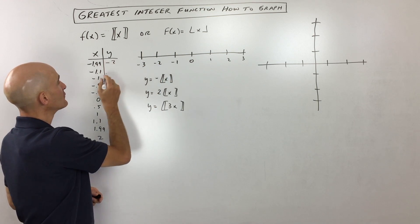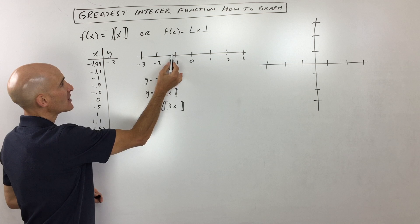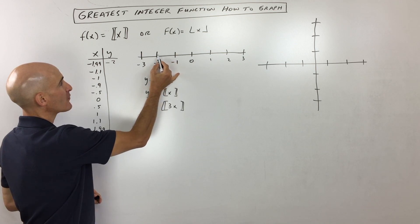So this would put us here at negative 2. Now, if we're at negative 1.1, that's right here. It's almost negative 1, but you're not quite to negative 1 yet. So you round down to negative 2 again.